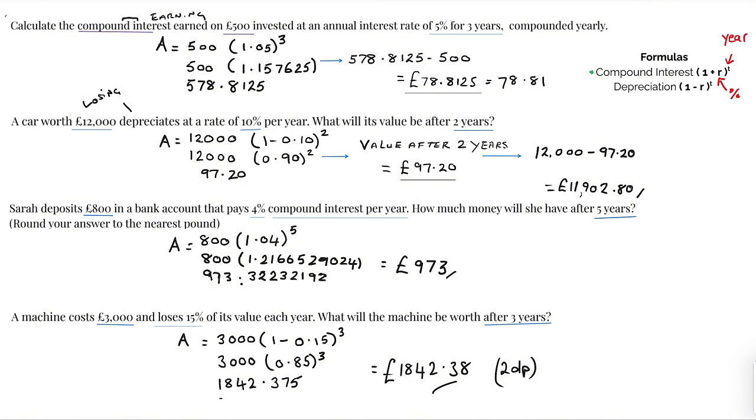973 pound 0.32232192, but this question does say round your answer to the nearest pound so doing that it's 973. So she will have after five years in a bank account 973 pound.